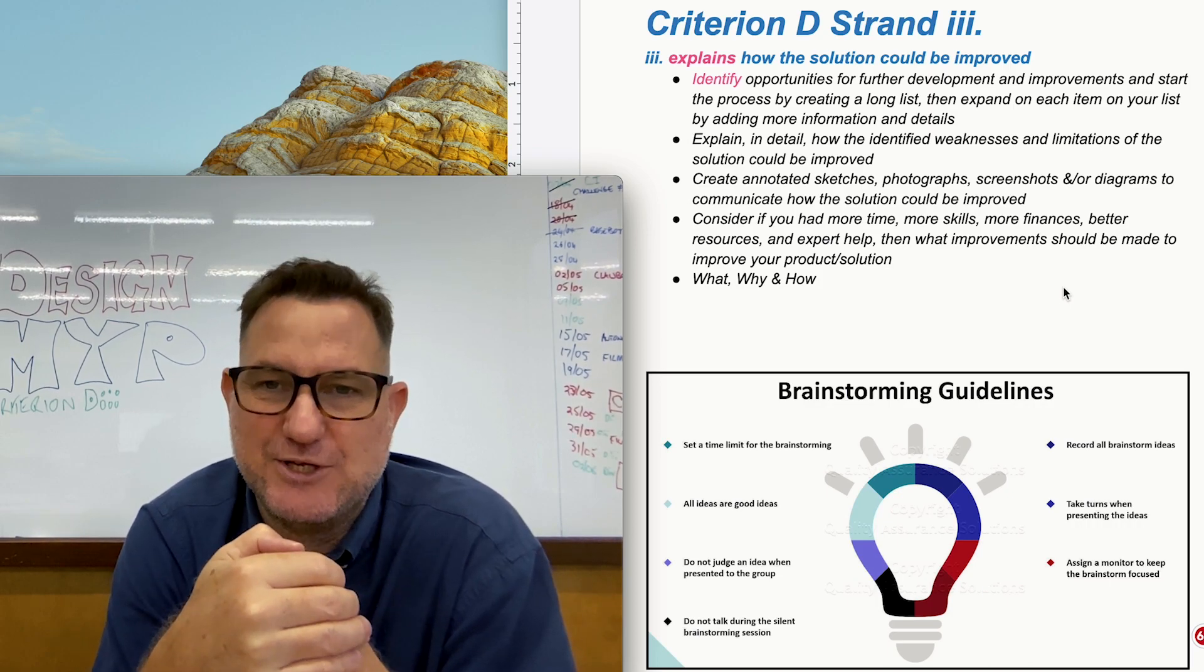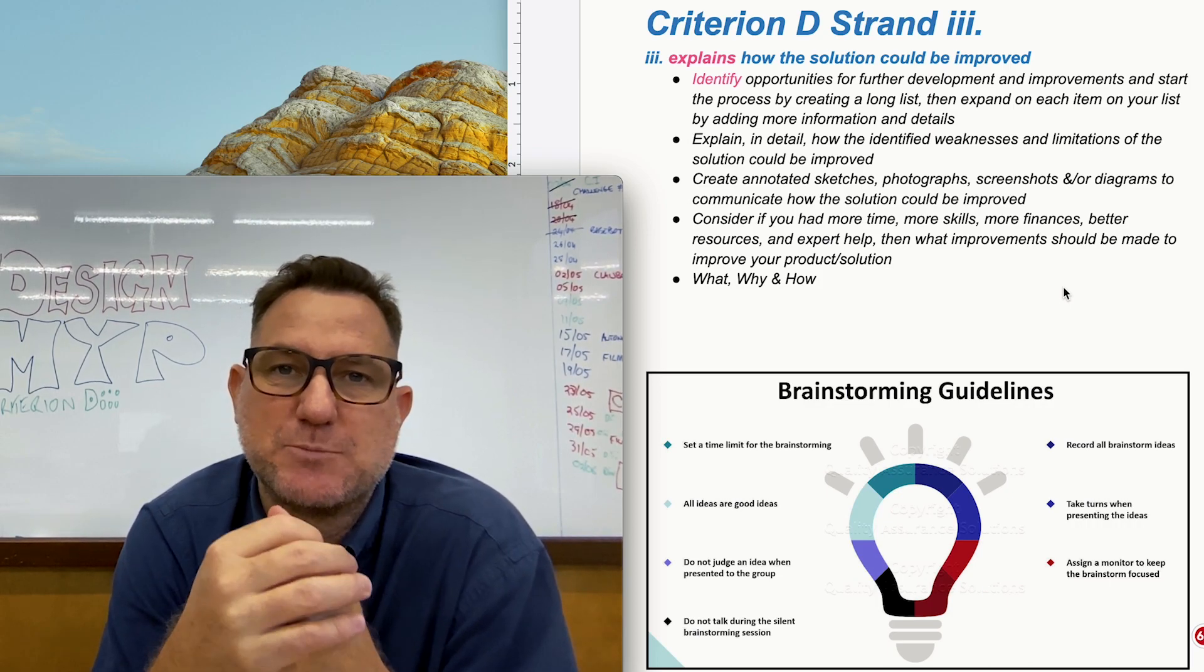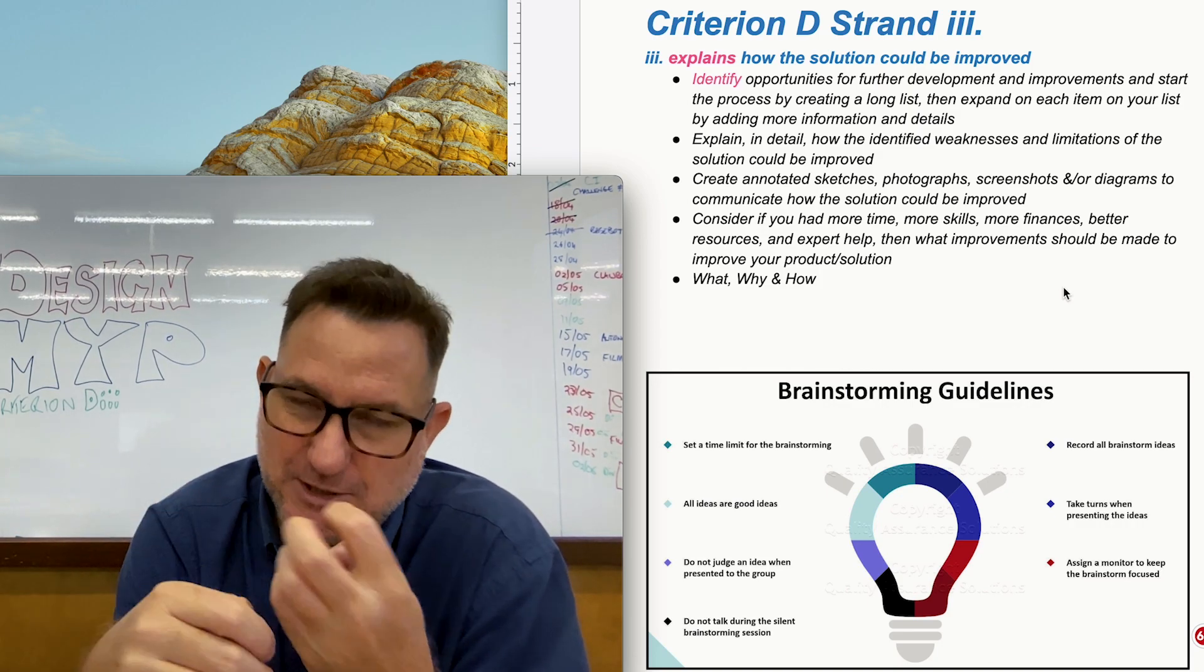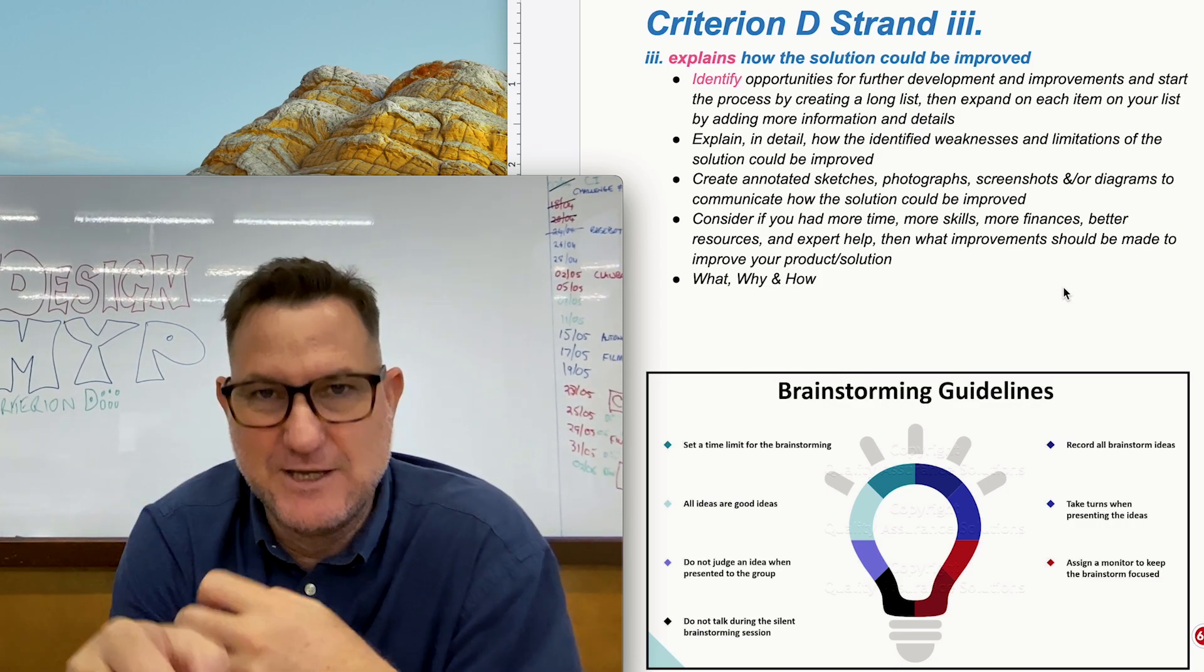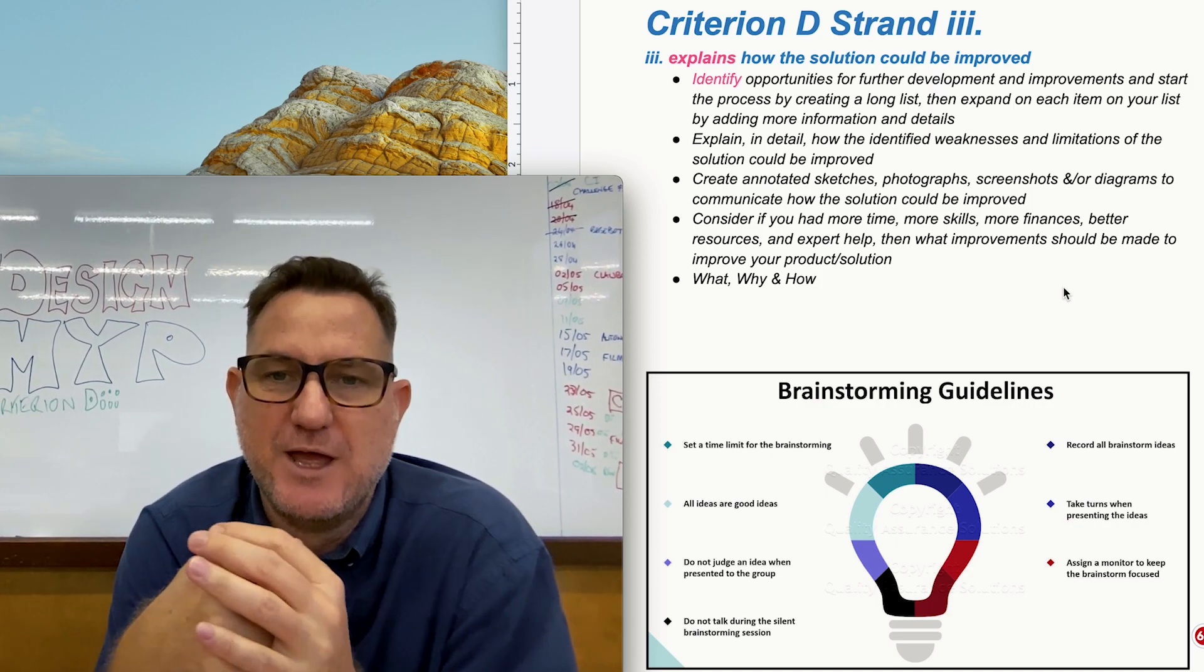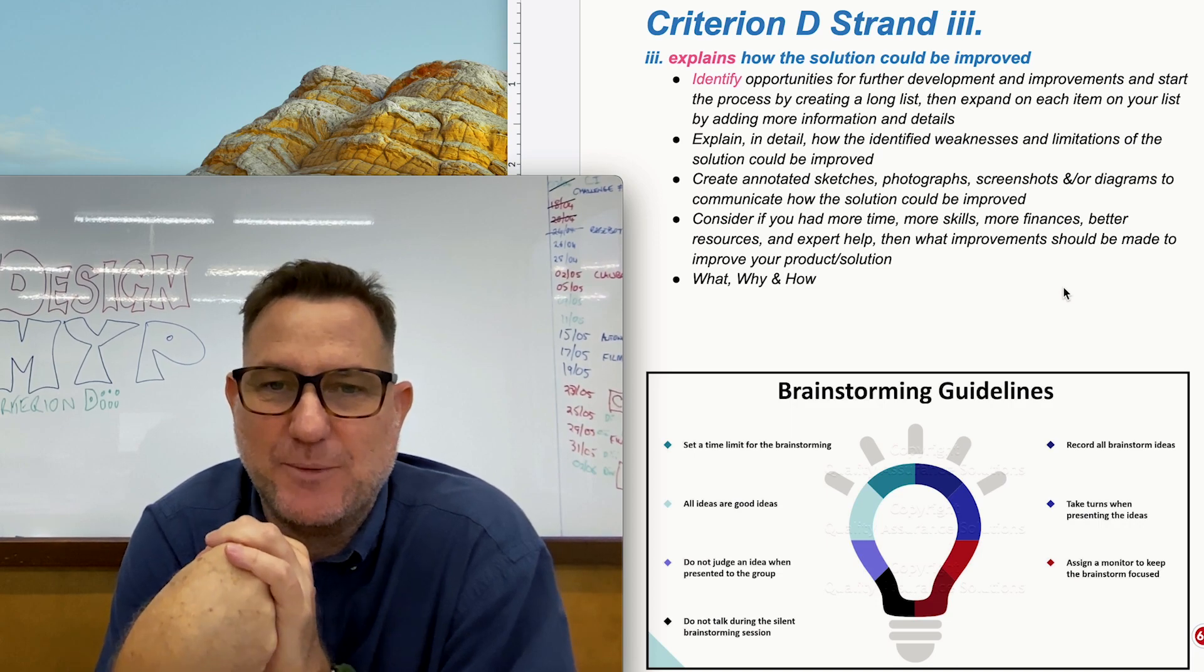So in this criterion here, in this strand 3, this is where you explain some of the things that you would like to do if you perhaps did the project again or if you had better skills or if you had more time or if you had some people to help you or better materials. So this is what this section is all about.